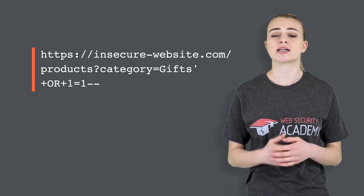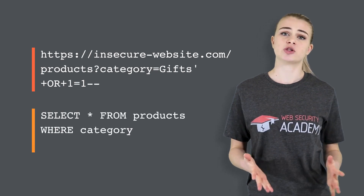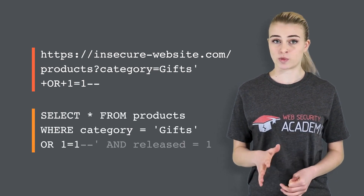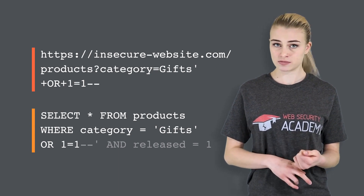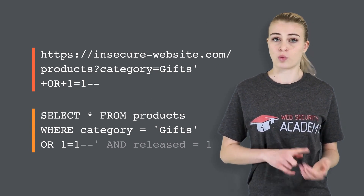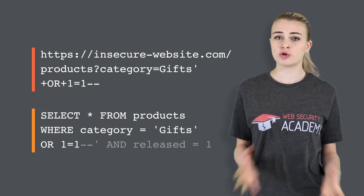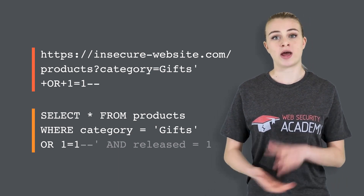Going further, the attacker can cause the application to display all the products in any category, including categories they don't know about. To do this, the attacker can send this attack, which results in this SQL query. The modified query will return all items where either the category is GIFs, or 1 is equal to 1. Since 1 equals 1 is always true, the query will return all items.